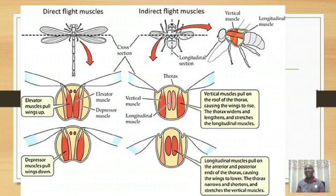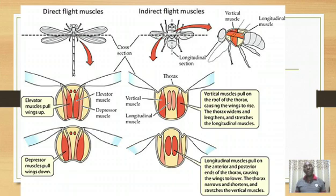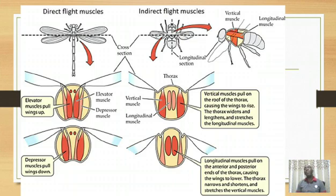Now we move to indirect flight muscles. They bring about movement of the wings indirectly. In other words, they are not attached to the wings directly. They are attached to the tergum — the roof of the thorax. So when they bring about movement of the tergum or roof of the thorax, it is that movement which brings about movement of the wings. The muscles don't move the wings directly; they move the tergum, which in turn moves the wing. Hence the term indirect flight muscles.